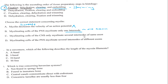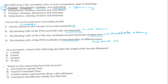The statement about myelinating cells of the CNS myelinating several internodes of the same axon is wrong, because the CNS has multiple axons, not the same axon. Similarly, the statement that PNS myelinating cells myelinate several internodes is incorrect — the answer is one axon. So the correct answer is B.